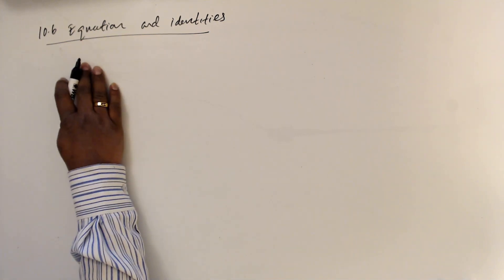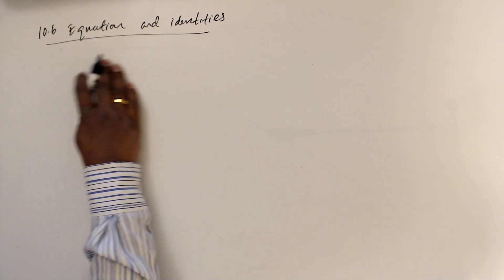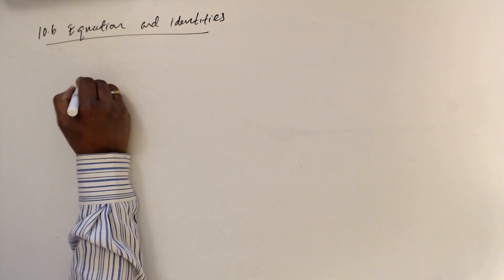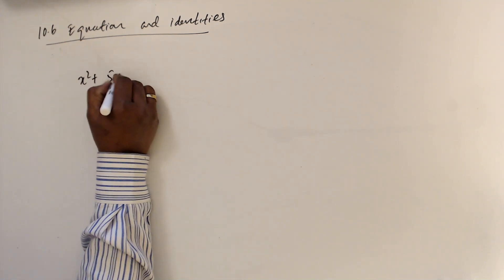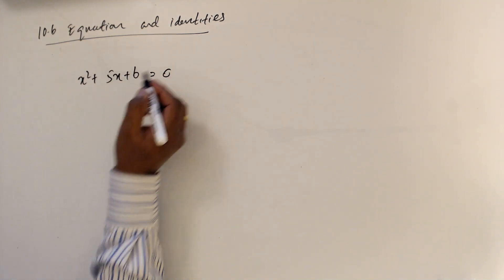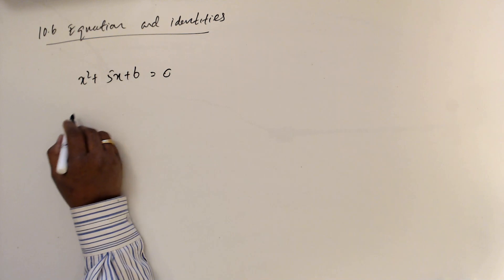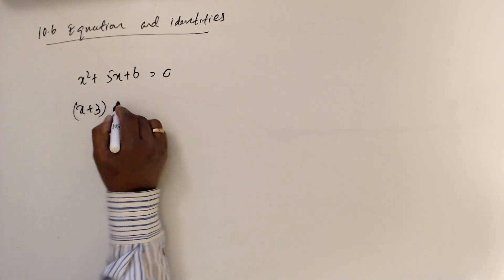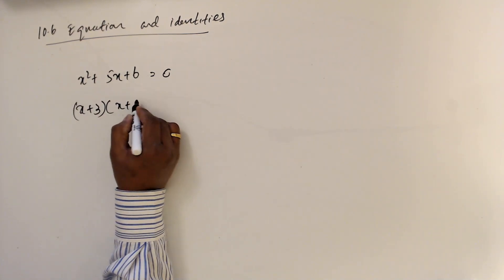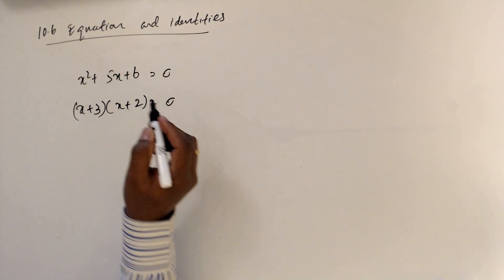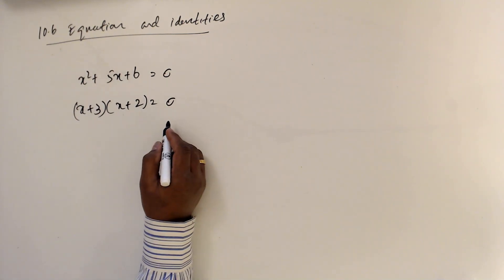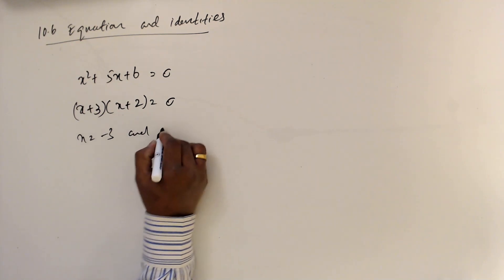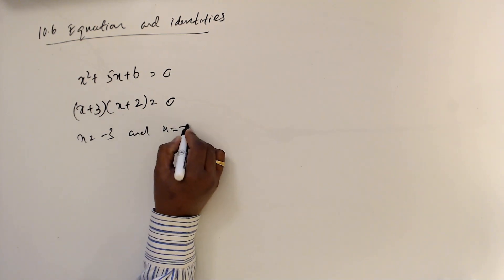10.6 equations and identities. Let's consider this equation: x squared plus 5x plus 6. We can factor this as (x plus 3)(x plus 2) equals 0, giving x equals minus 3 and x equals minus 2.